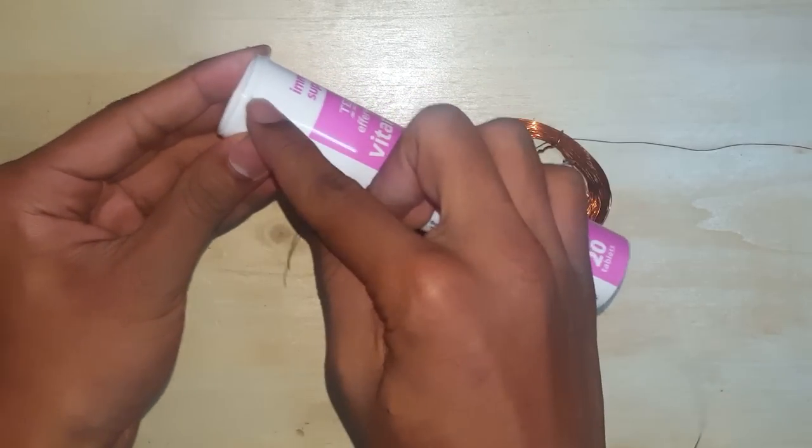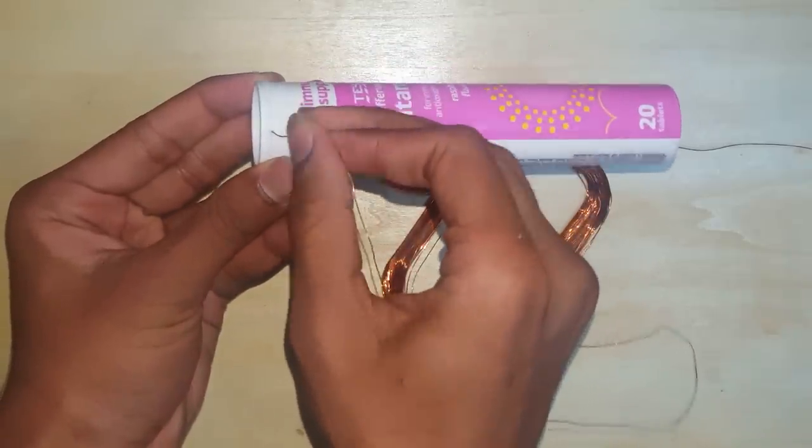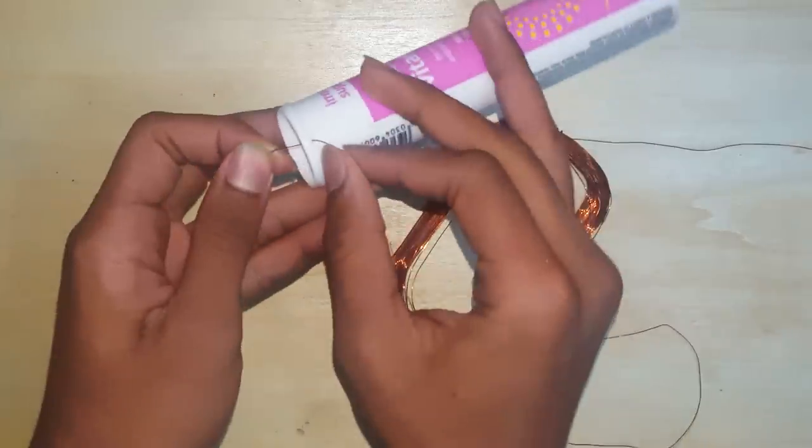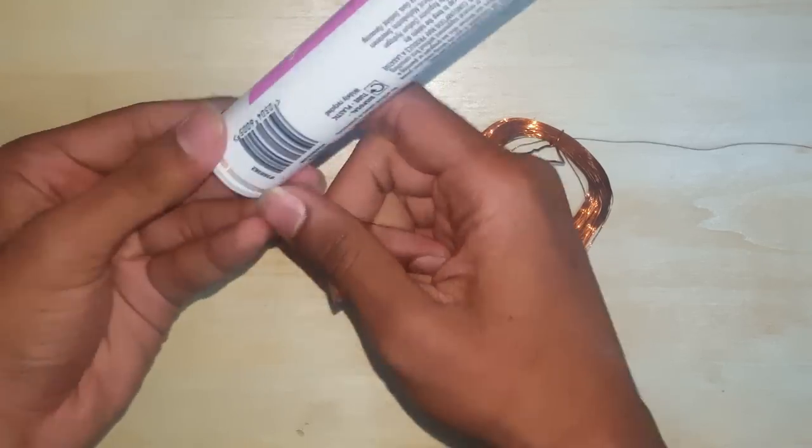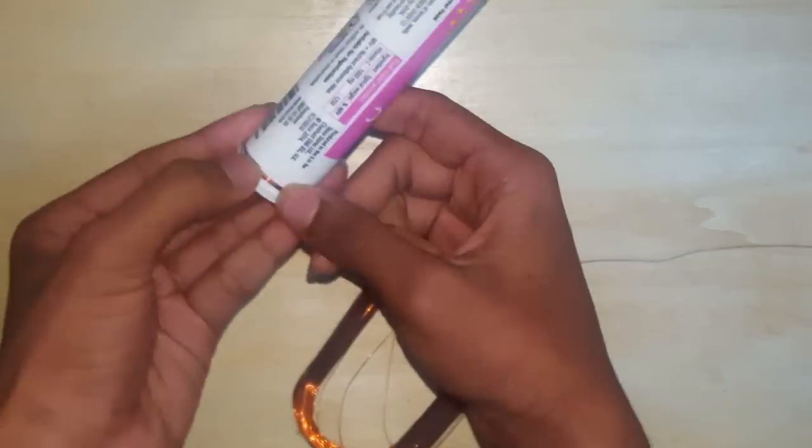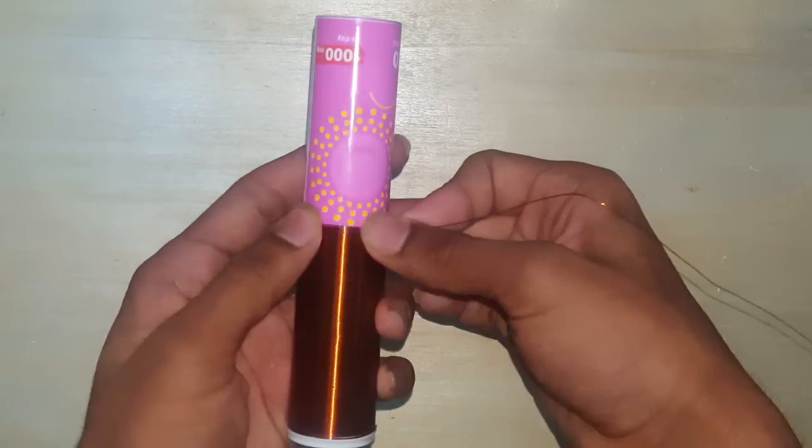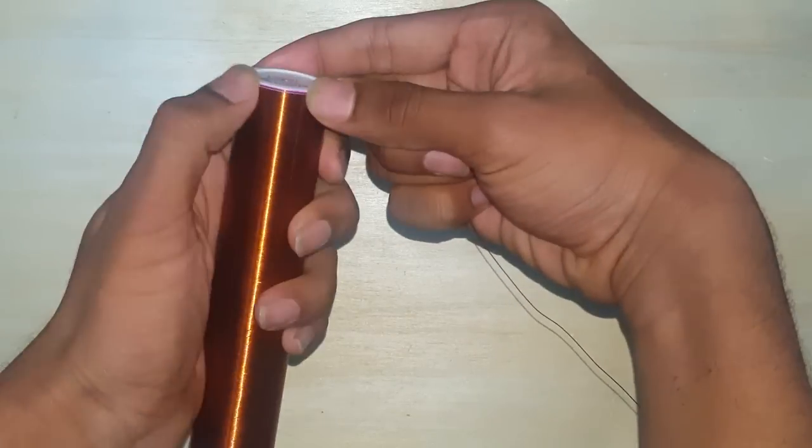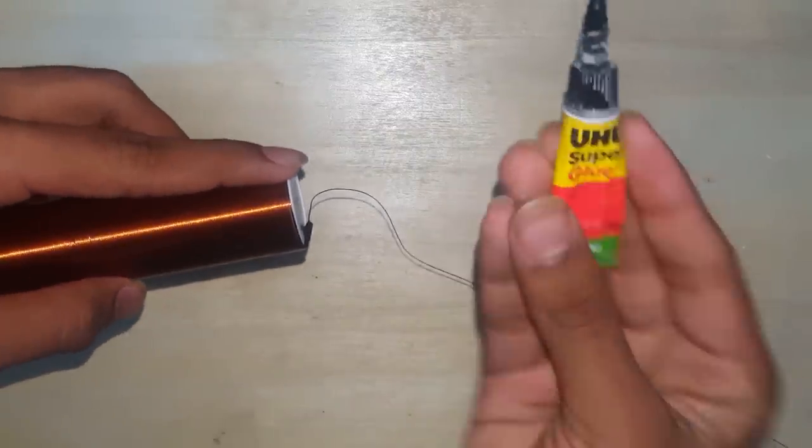I've already drilled a hole in the bottom. Now insert the wire through the hole and then start winding it. Once you have wound the coil, take some super glue and glue it.